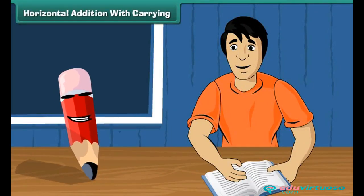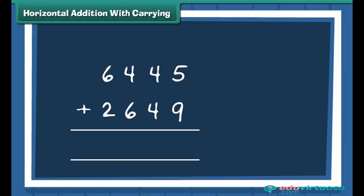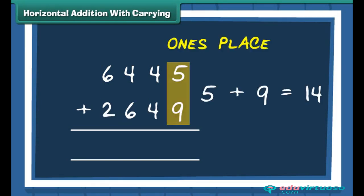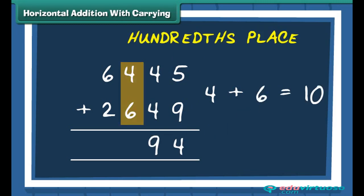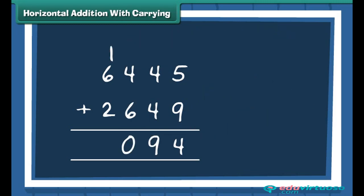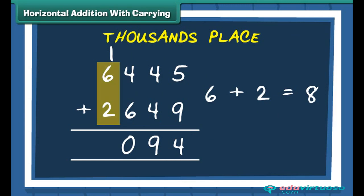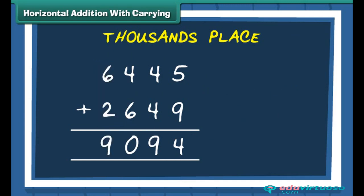Let us practice one more example with a bit of a twist. We have two numbers, 6445 and 2649. Add the digits at the ones place and carry one to the tens place. Then add the tens, then the hundreds — carry one to the thousands place. Finally, add the thousands. The answer is 9094.